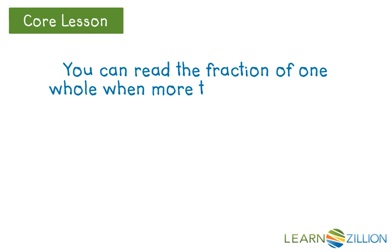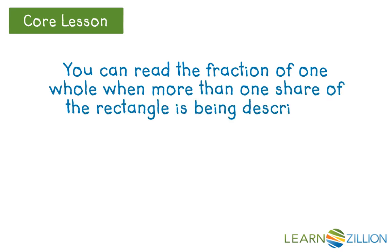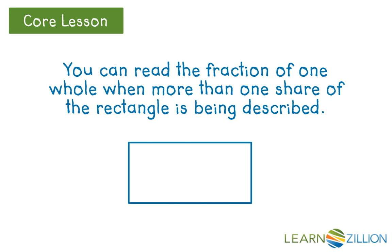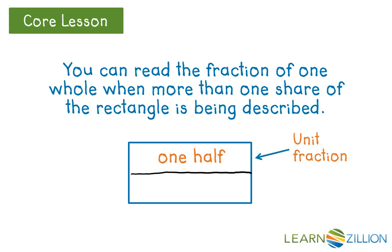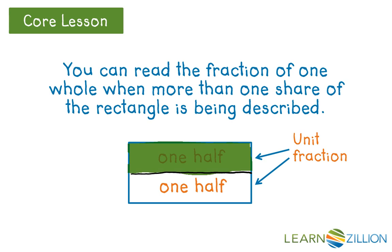You can read the fraction of one whole when more than one share of the rectangle is being described. When you have one whole rectangle and partition it into two equal parts, we call each share a unit fraction. So we have the unit fraction one-half and this unit fraction one-half. A unit fraction is one of the equal shares that represents the whole. We have the same number of unit fractions as the number of equal shares we have partitioned a whole into, so we have two unit fractions when we have two equal shares. We know each share is called one-half.